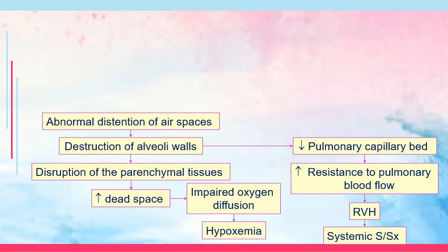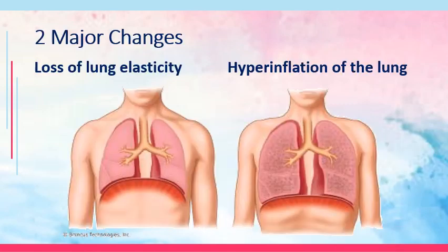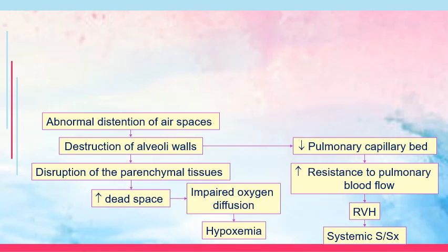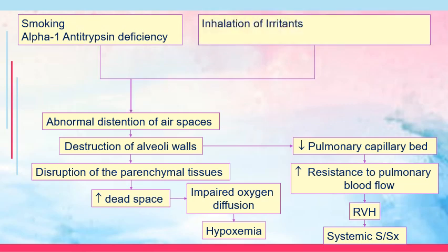With right ventricular hypertrophy, since this involves the right side, you would have systemic signs and symptoms — edema, jugular vein distension, and ascites. The two major changes in emphysema are loss of lung elasticity and hyperinflation of the lungs brought about by air trapping. Because of hyperinflation, the diaphragm becomes flattened, weakening the effect of the muscle. Risk factors are the same as COPD: smoking, alpha-1 antitrypsin deficiency, and inhalation of irritants.